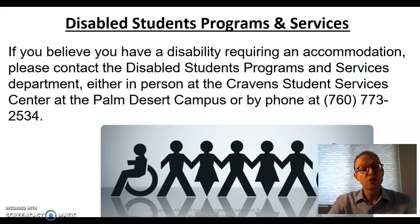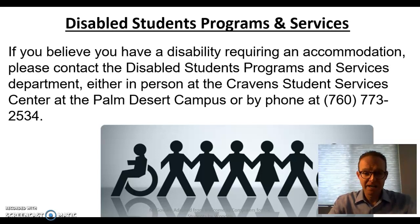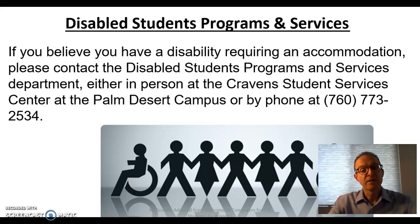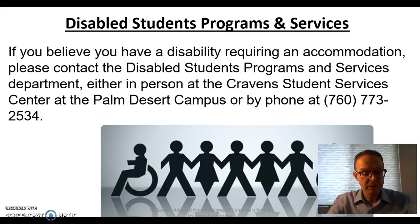Disabled Student Programs and Services. If you believe you have a disability requiring an accommodation, please contact the Disabled Student Programs and Services Department, either in person at the Craven Student Services Center at the Palm Desert Campus, or by phone at 760-773-2534.